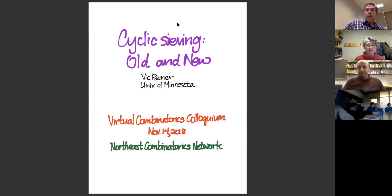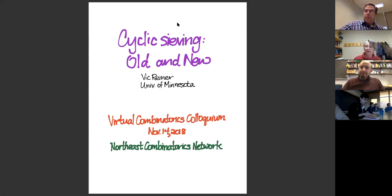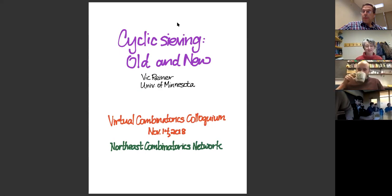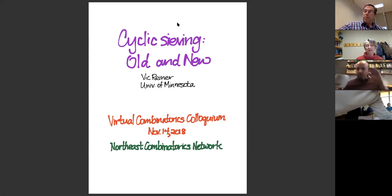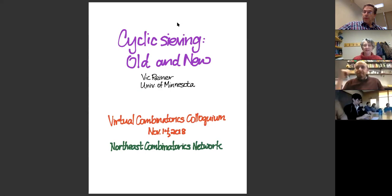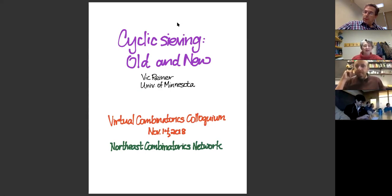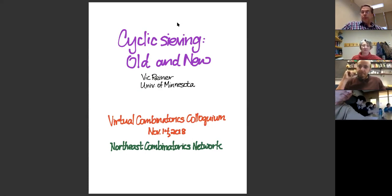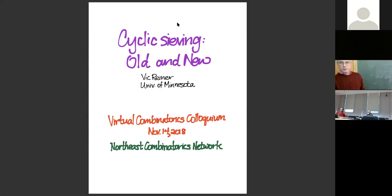This has turned out to be a lot of fun, and it worked surprisingly well. We're really excited to have Vic Reiner here with us today. Vic got his PhD in 1990 at MIT; he was a student of Richard Stanley, and he's been at the University of Minnesota Twin Cities ever since. He's interested in algebraic, geometric, and topological combinatorics, although mostly he likes to count things.